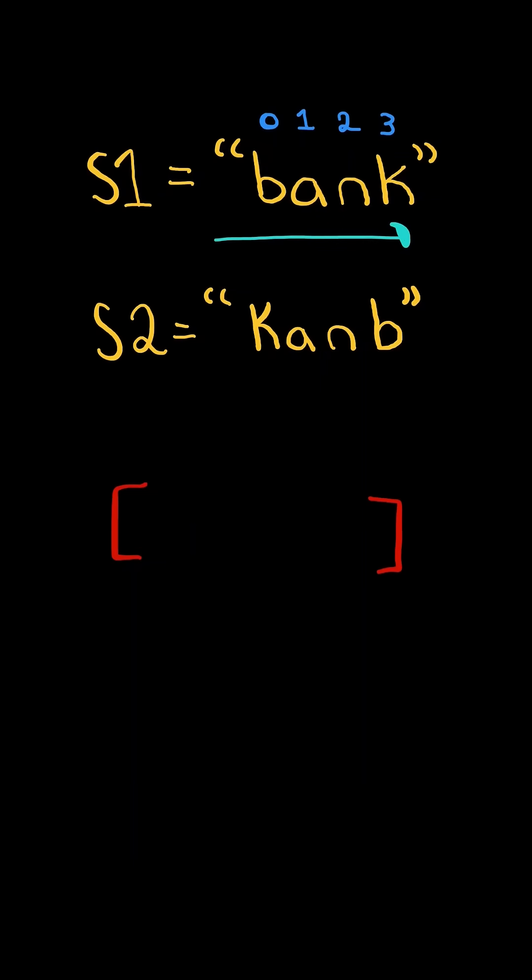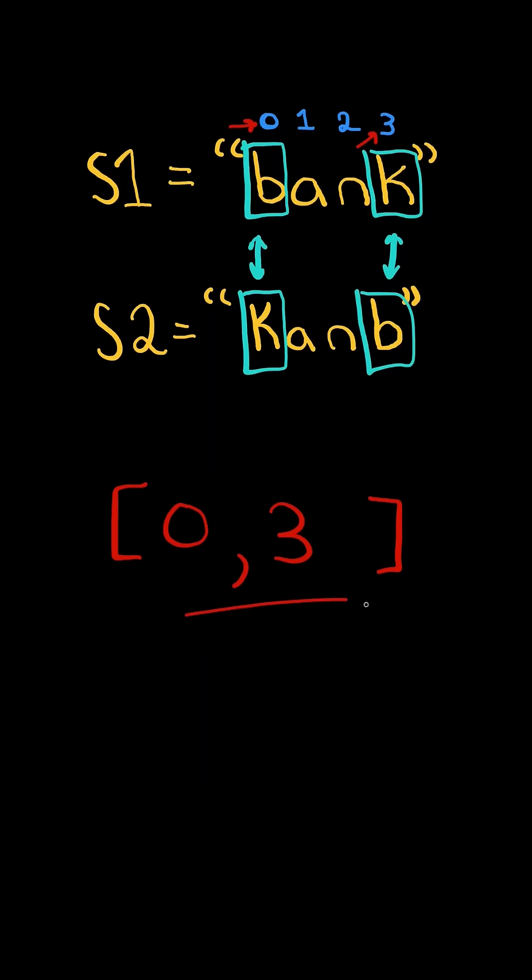We then iterate through both strings, and if the characters are not equal, we append the indices to the list.